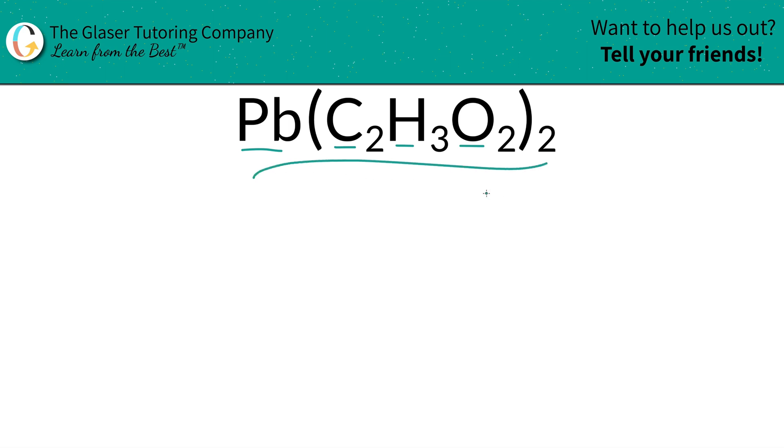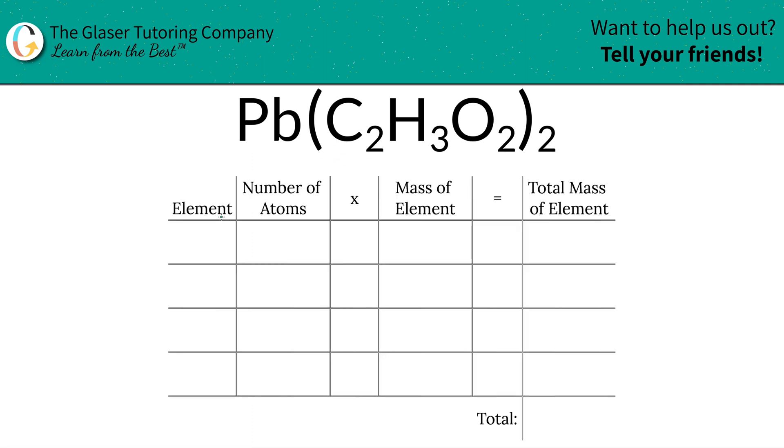First thing we got to do is find the mass. Once we know the mass of the entire compound, then we're going to find those percentages easy as pie. So the first step is we're going to write down the elements we see in the compound.